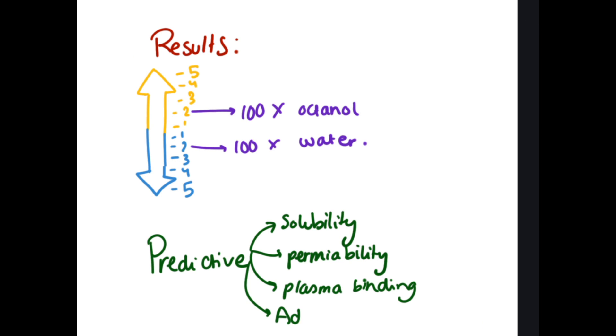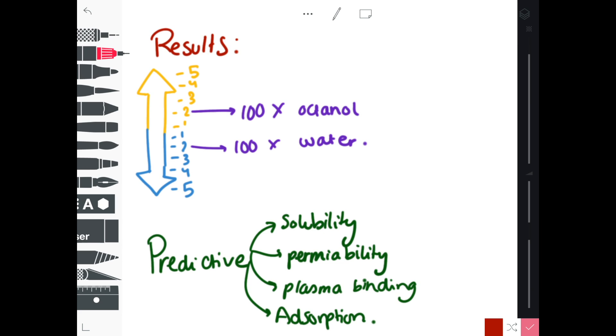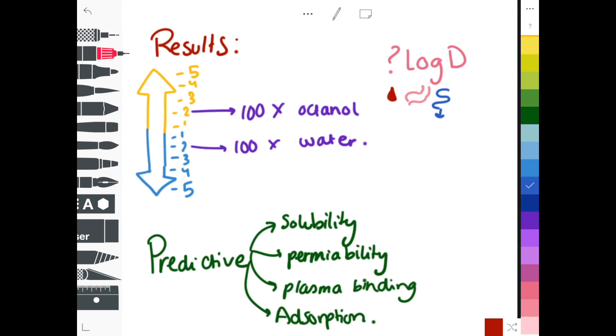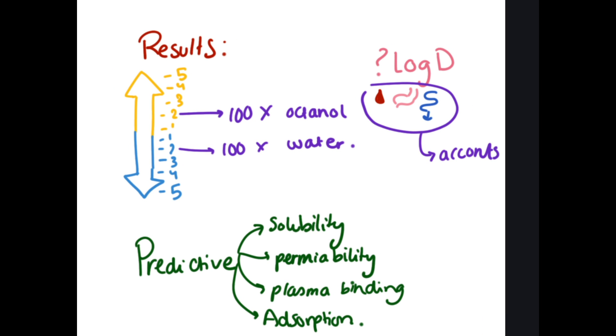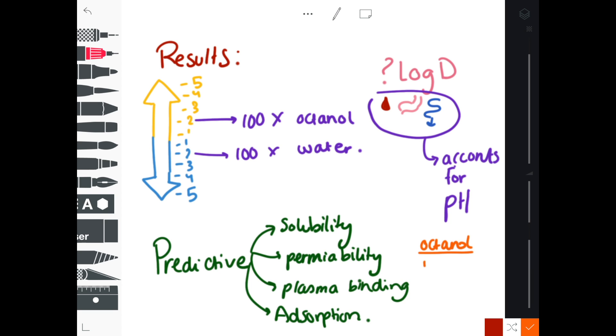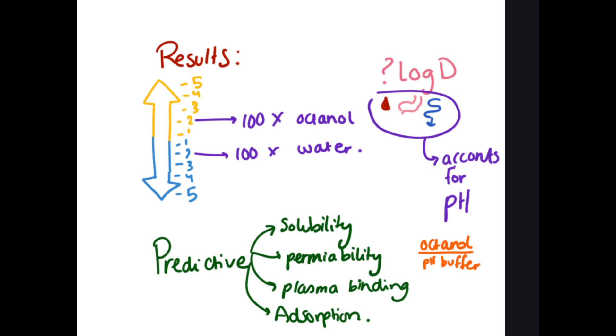Now, what is LogD? As we know, different components of the body have different pH, like the blood, stomach, and intestines. LogD accounts for these pH changes. So instead of octanol over water, it's octanol over pH buffer.